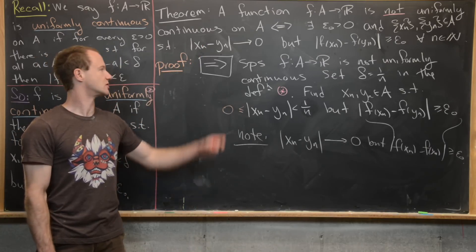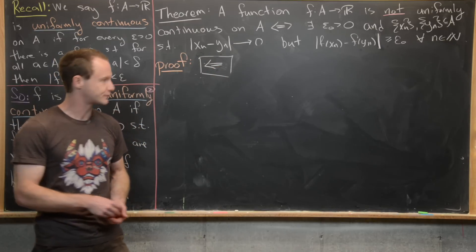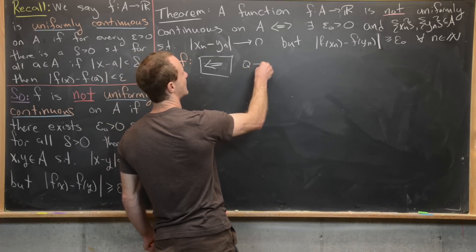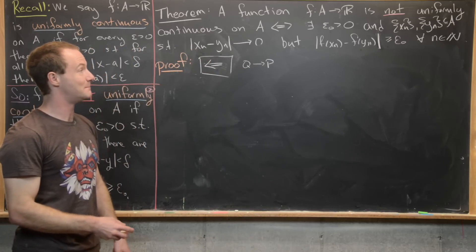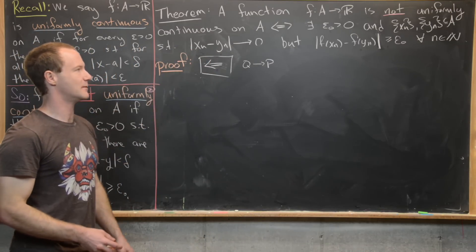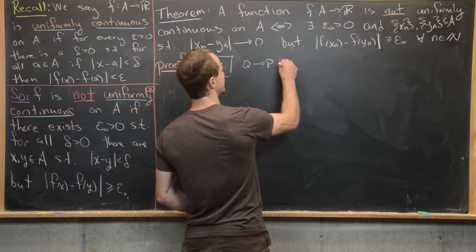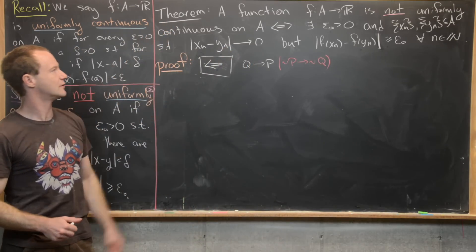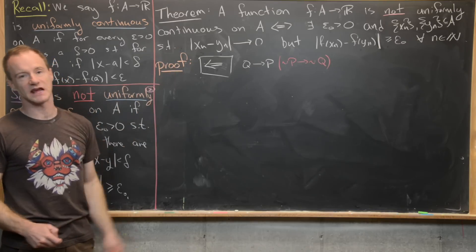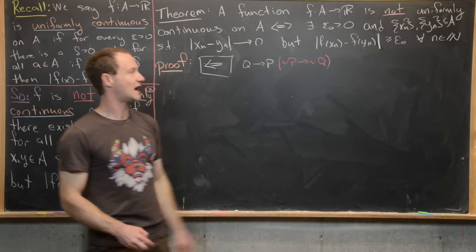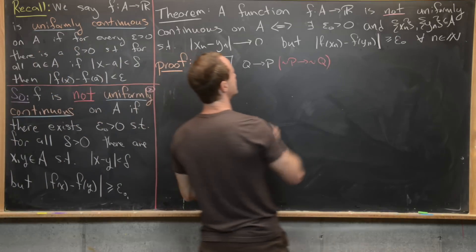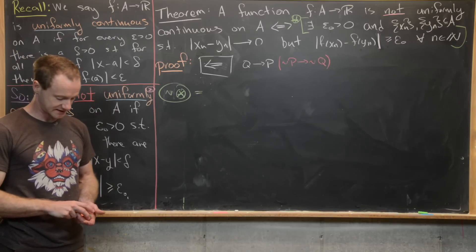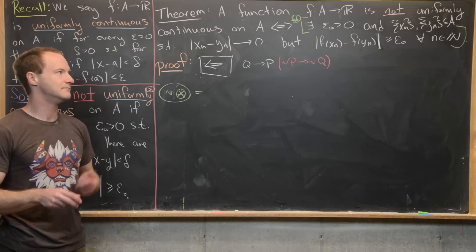Now we do the reverse direction by contrapositive. The statement to prove is q ⟹ p, where q is the statement about sequences and p is not uniformly continuous. The contrapositive is not-p ⟹ not-q, i.e., uniformly continuous implies the negation of the sequence statement. So we need to negate the sequence statement.